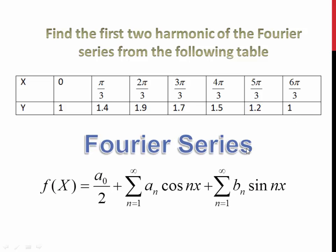This is your Fourier series. F of X equals A naught by 2 plus summation n runs from 1 to infinity A n cos nx plus summation n runs from 1 to infinity B n sin nx.